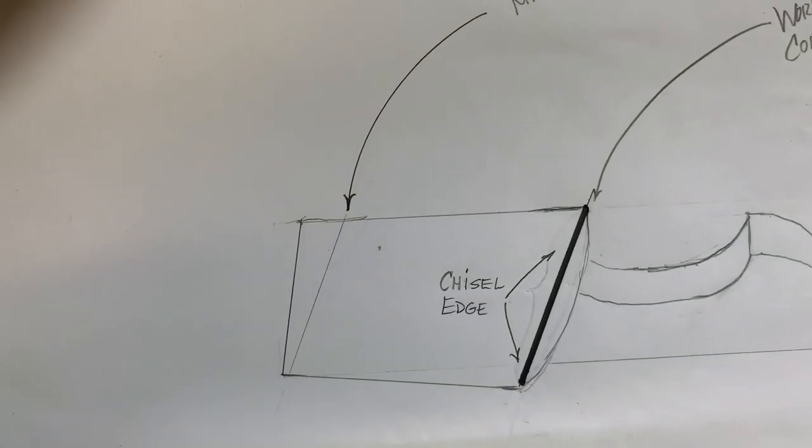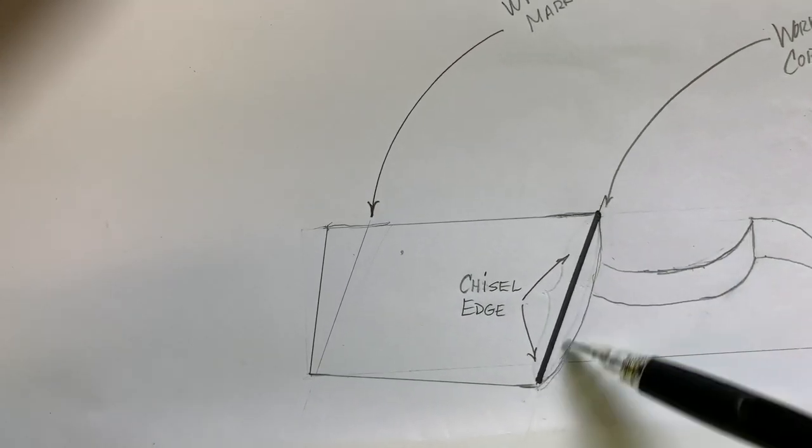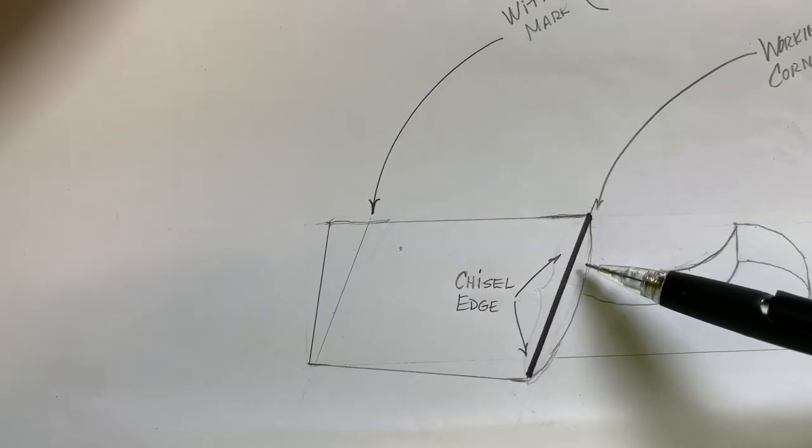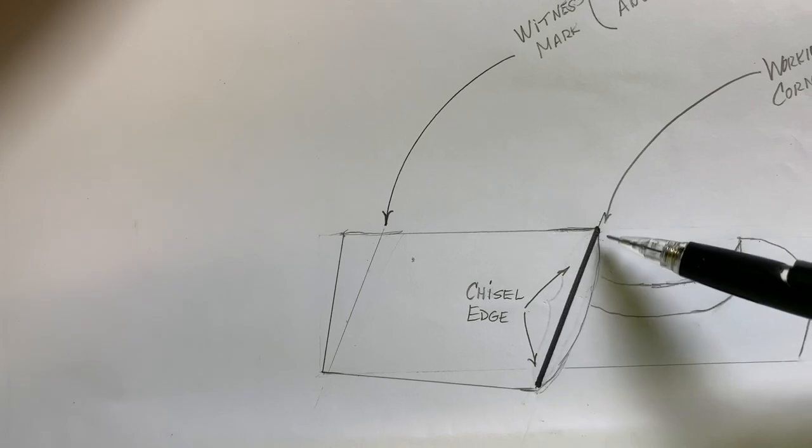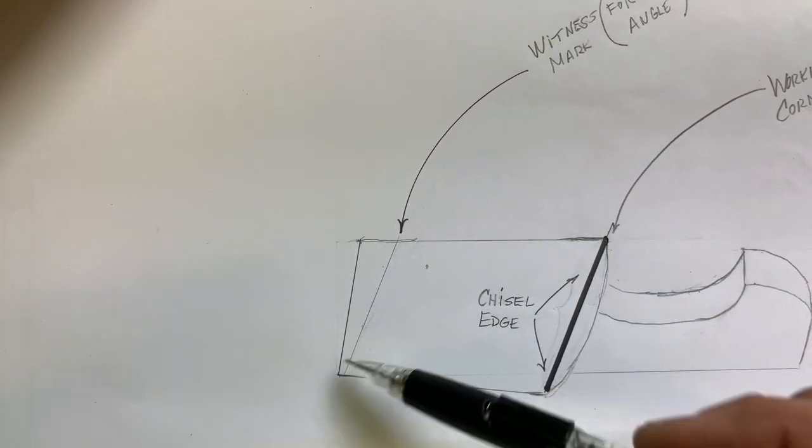So a recap on this view: keep filing to this witness mark until this rounded chisel edge becomes completely parallel with this witness mark.